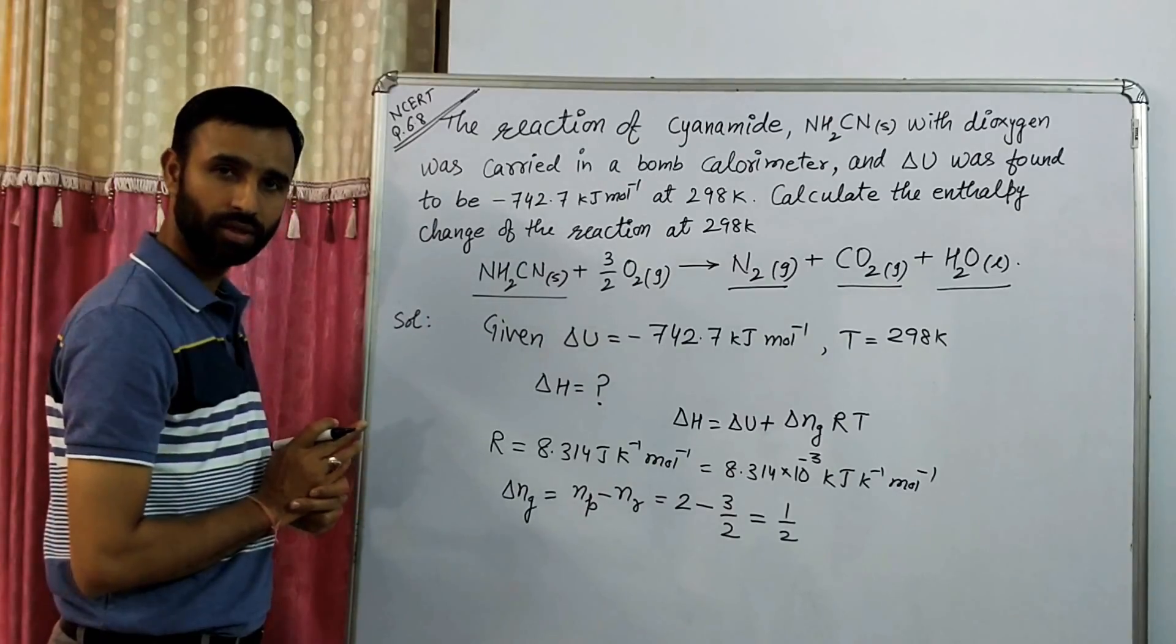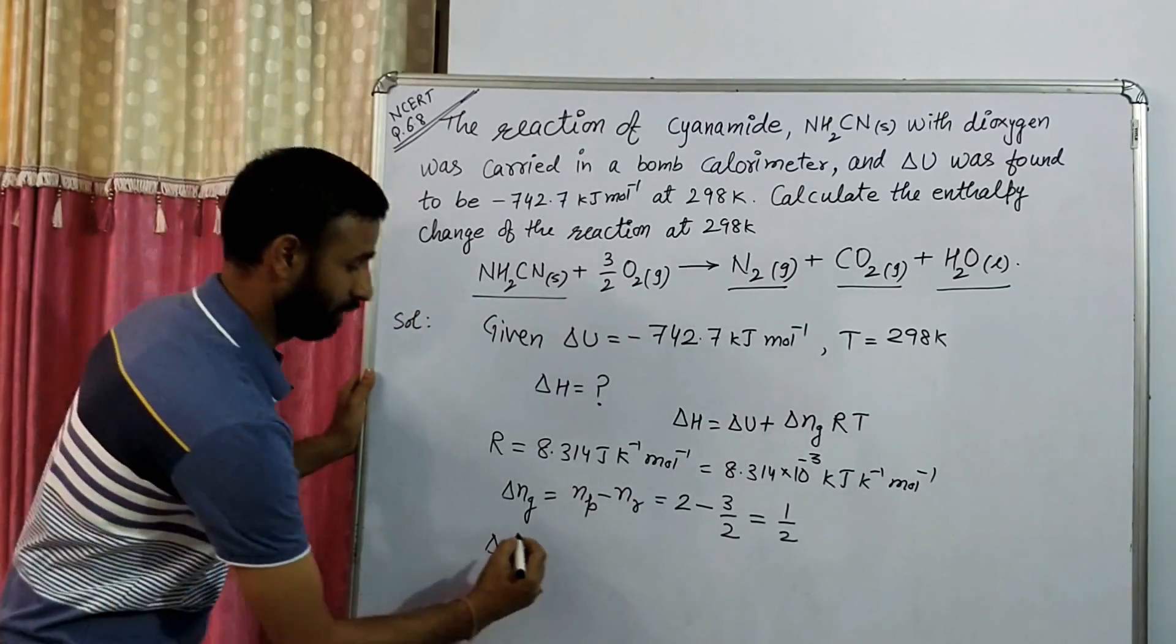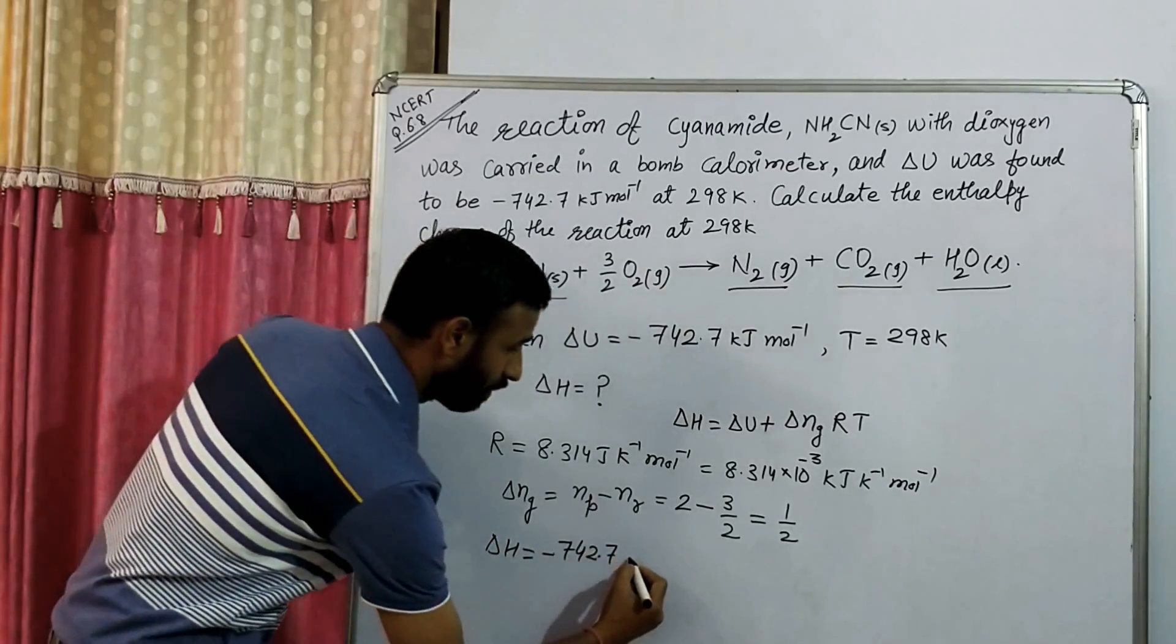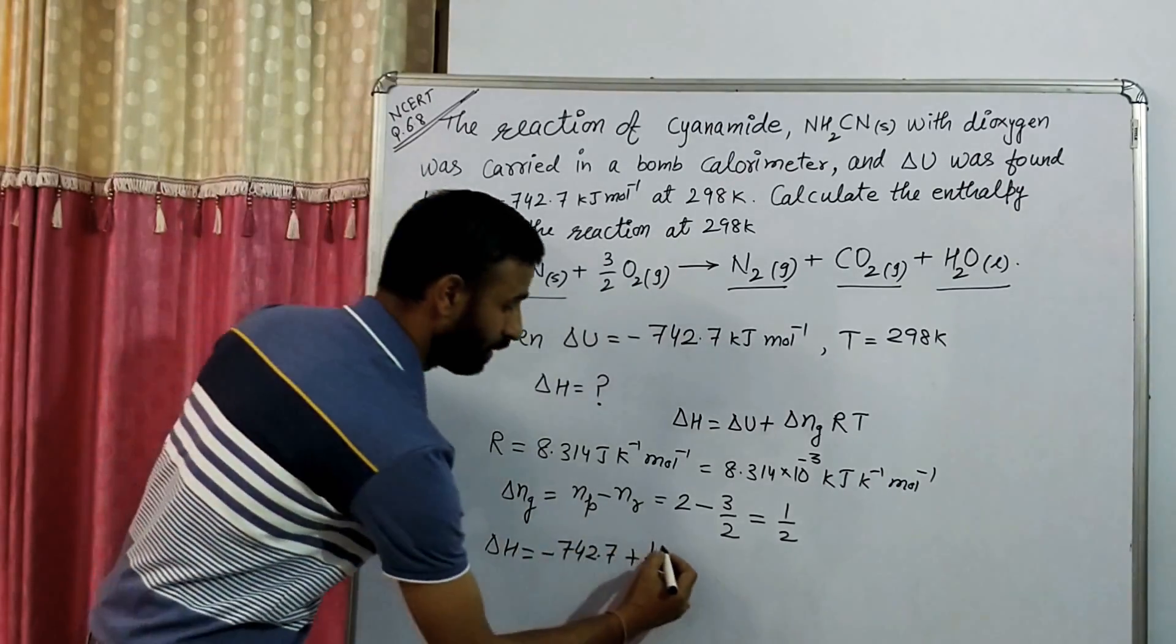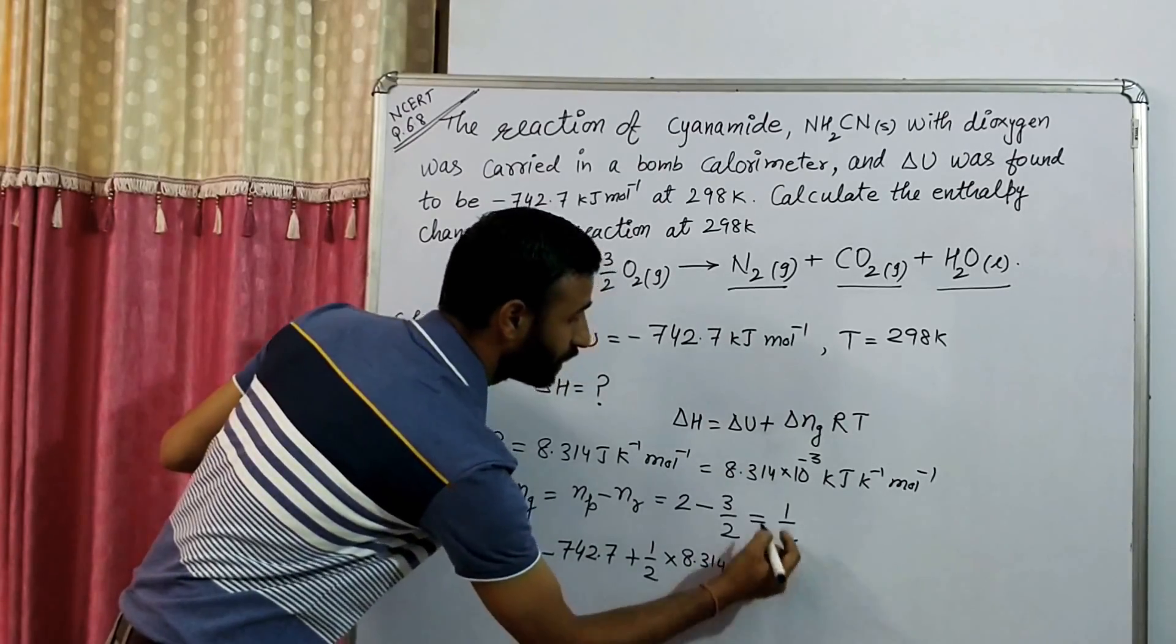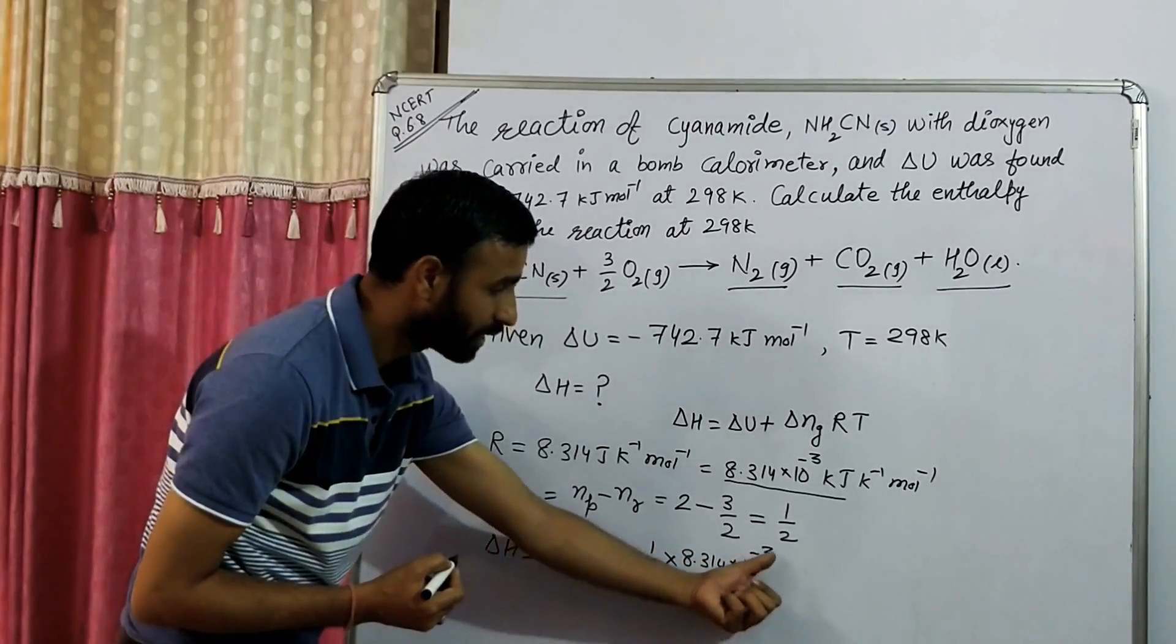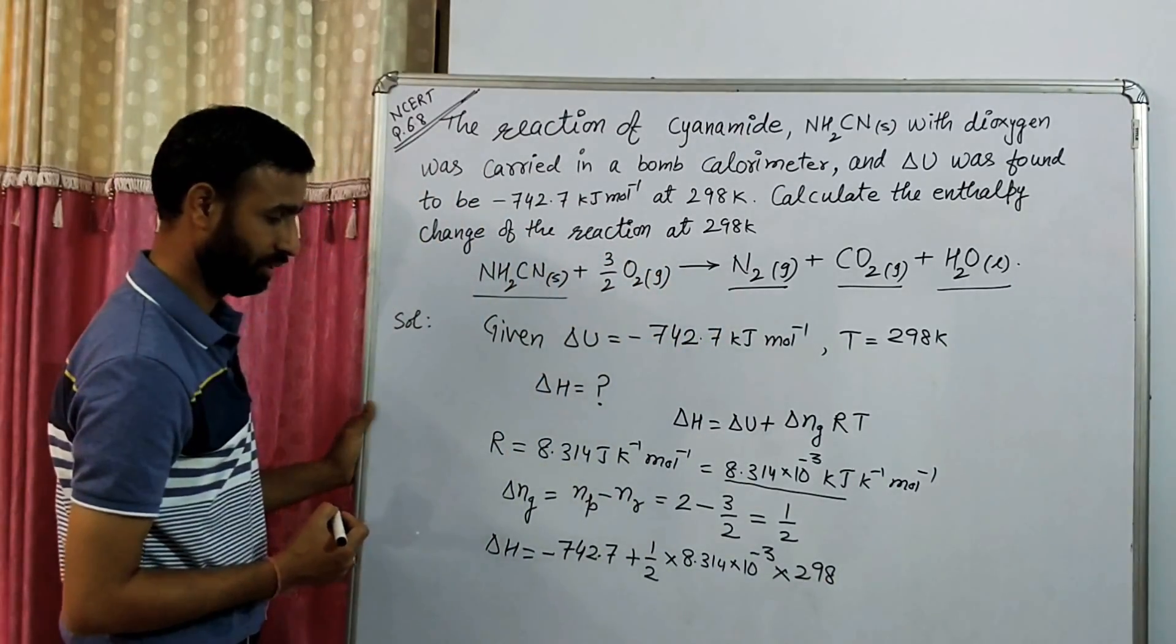Delta H is equal to minus 742.7 kilojoules per mole plus half—delta Ng. What is R? 8.314 into—this is the key point—we are writing 8.314 into 10 raised to the power minus 3, because it is taken in kilojoules. So it is 10 raised to the power minus 3, into 298 Kelvin.